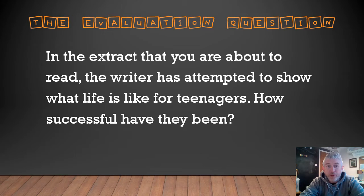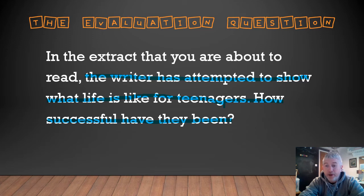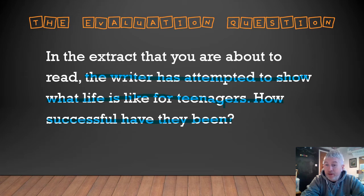So the question that you're going to be answering is: in the extract that you're about to read, the writer has attempted to show what life is like for teenagers — how successful have they been? This bit of the story is showing a couple of teenagers going through a fairly ordinary, typical teenage experience. Your task is to look at how the writer has been successful in showing what life is like for teenagers in this particular extract.